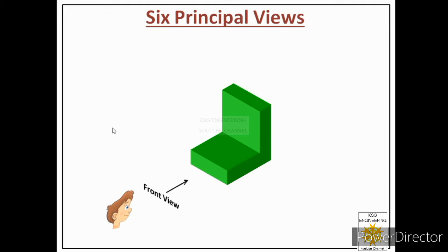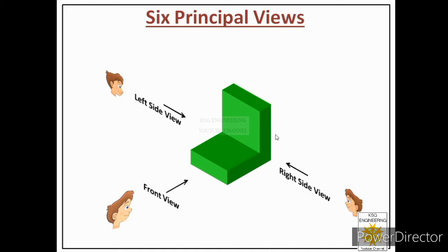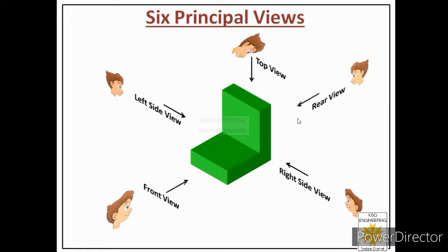When the observer moves to the left and looks at the object from the left side, whatever shape the observer sees from that side is called the left-hand side view. Similarly, from the right side it is the right-hand side view, from the top it is the top view, from the rear it is the rear view, and from the bottom it is the bottom view.